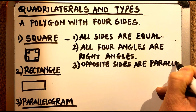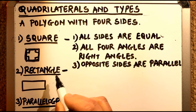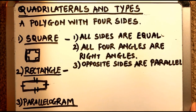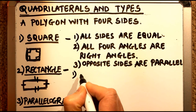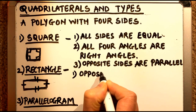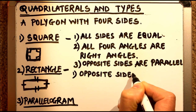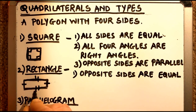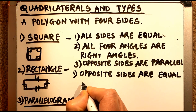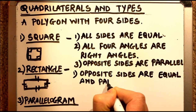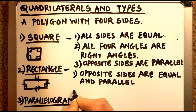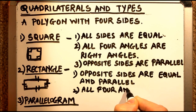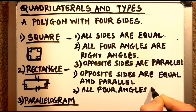Now we will come to the next shape which is a rectangle. This is the shape of a rectangle. In a rectangle, opposite sides are equal and parallel — that is the first property. All four angles are 90 degrees or right angles.